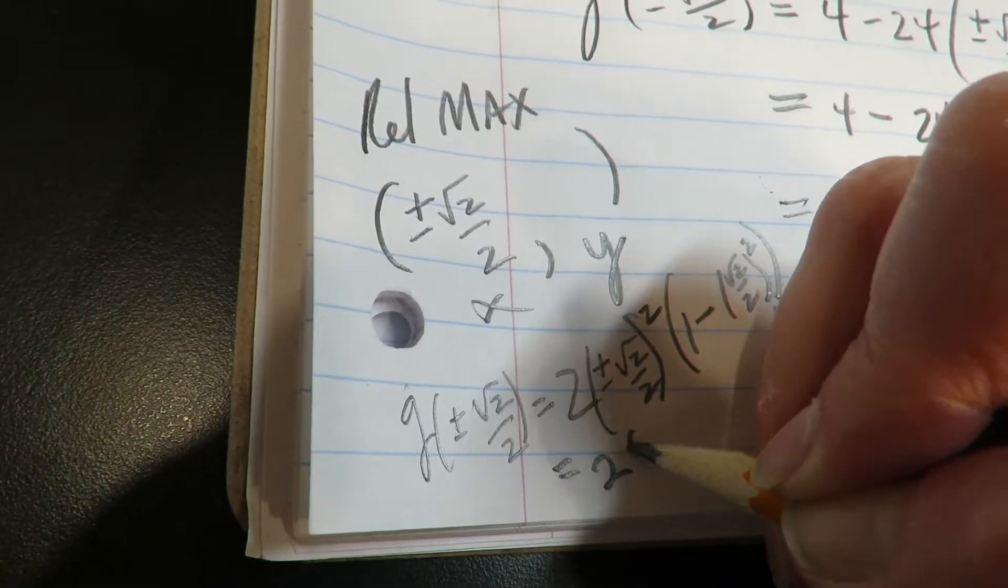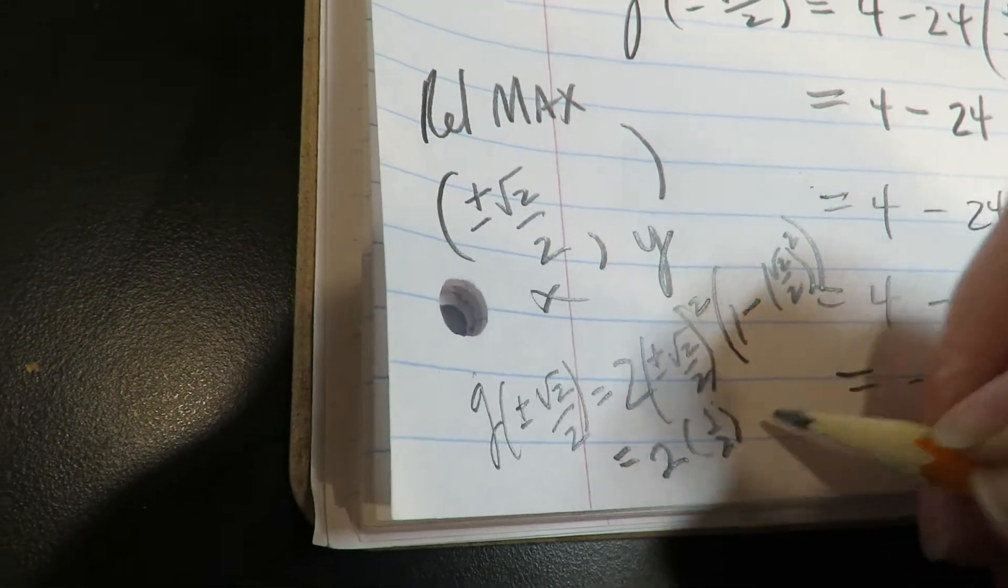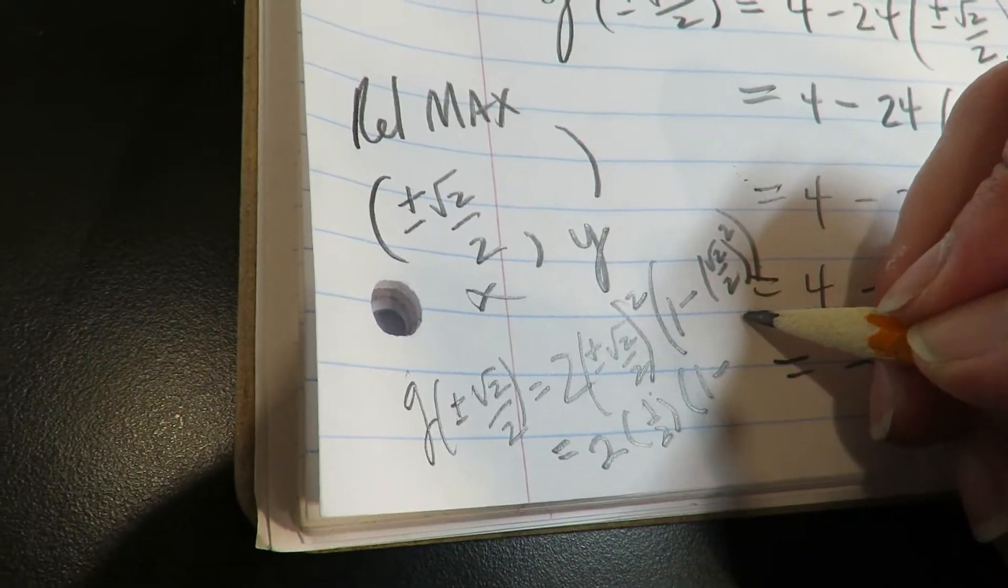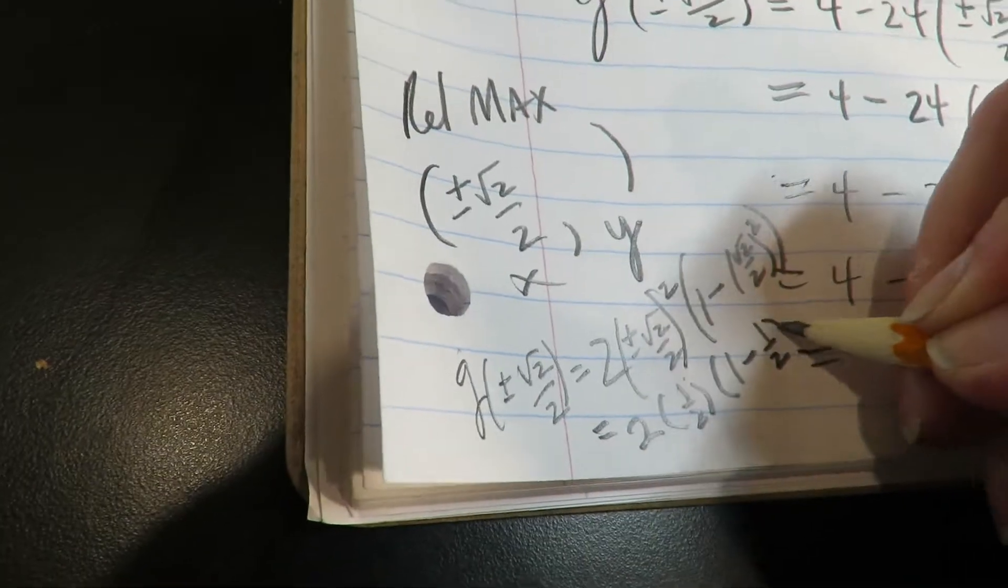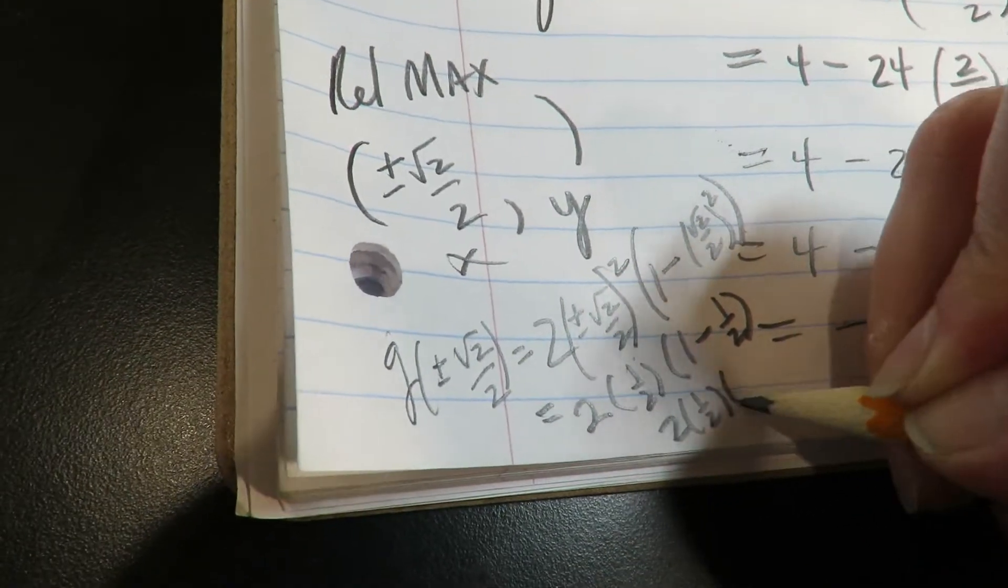All right, so this would be two times—this would again be 2/4 or 1/2—and then that would be times one minus, that would again be 2/4 or 1/2. So it looks like it's two times 1/2 times 1/2, which is 1/2. Okay, not sure how I feel about that, but that's it. That's your